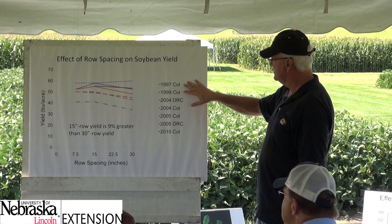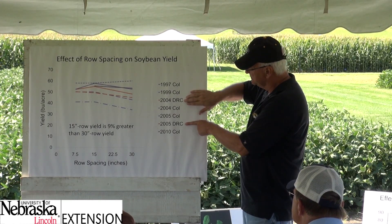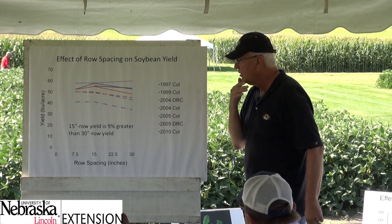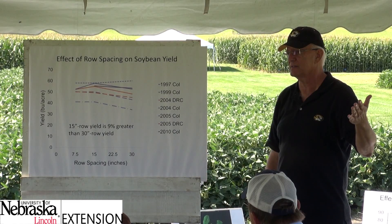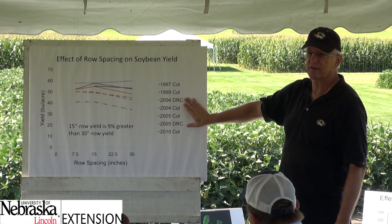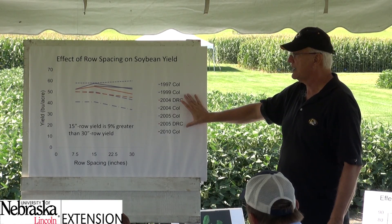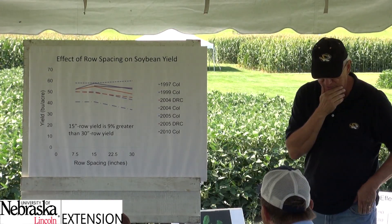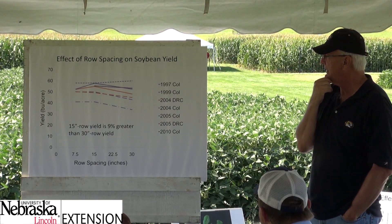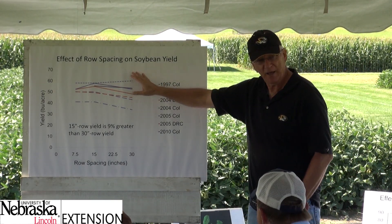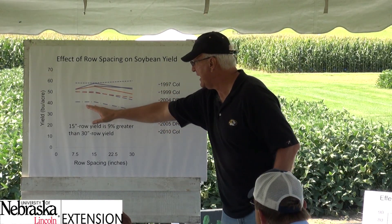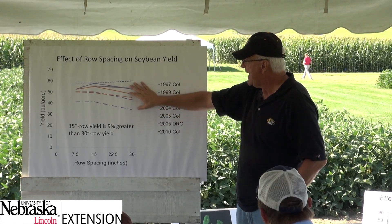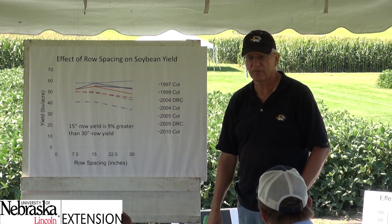Most of the work is done in Columbia — the central part of the state — but also down in the boot heel, our research site way down in the actual boot heel of Missouri. One reason I did that is that when I was in school it was said that row spacing doesn't matter in the south, but this is group five country — group five adapted soybeans — and we get the same response there as in Columbia. In most cases, 7.5-inch and 15-inch rows yield the same, but on average they're about 9 to 10 percent greater yield than 30-inch rows.